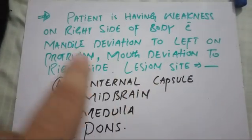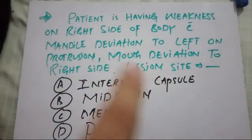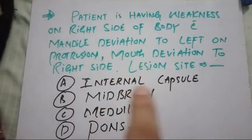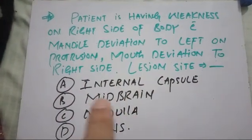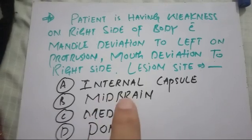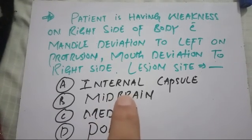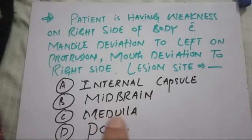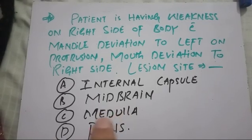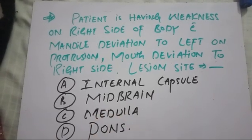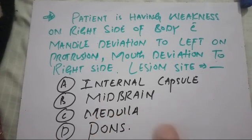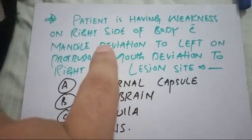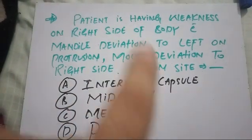In midbrain stroke we have third nerve palsy and fourth nerve palsy, which are not mentioned here. In medullary stroke we have involvement of the last four cranial nerves — 9, 10, 11, and 12 — so there is no problem of those here.